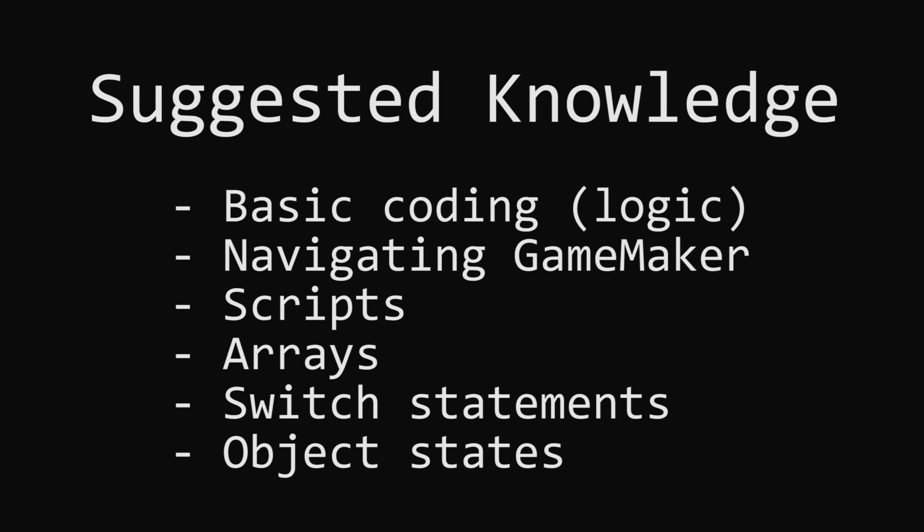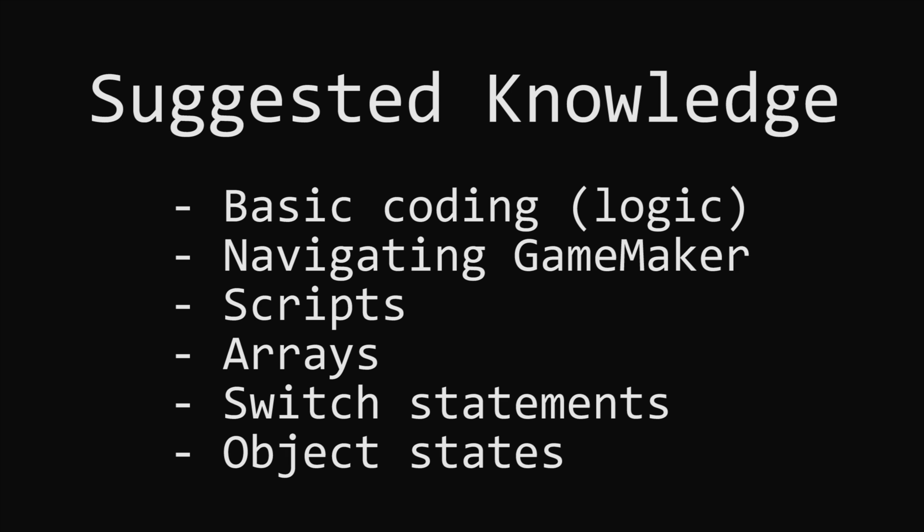I'm going to walk you through the thought process of what we need to make such a system. Before we begin, I'm hoping you already have a basic project set up and are relatively comfortable with coding and navigating in GameMaker. The system I'm going to show you today is going to be using scripts and arrays, and I'm also going to be making reference to switch statements and object states. If you're familiar with these concepts, then great. Otherwise, you may want to pause and Google around or watch some other tutorials before watching this one.